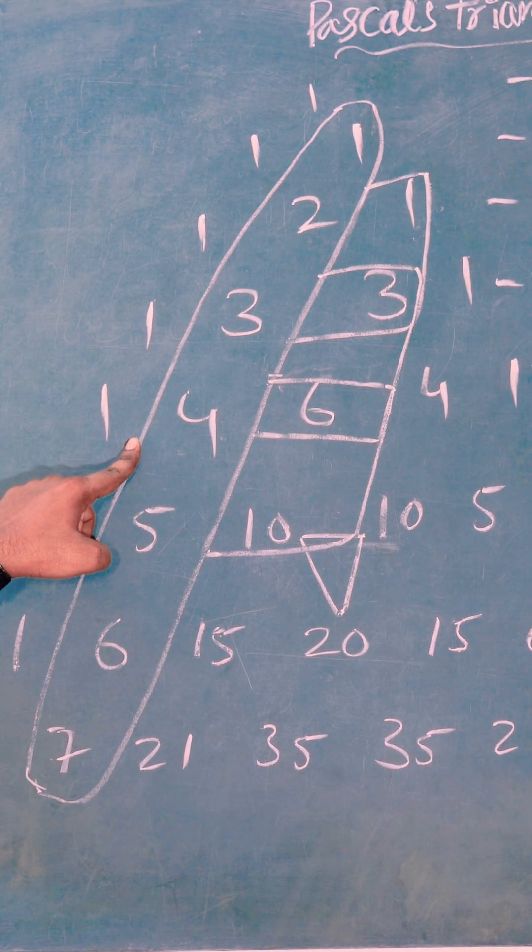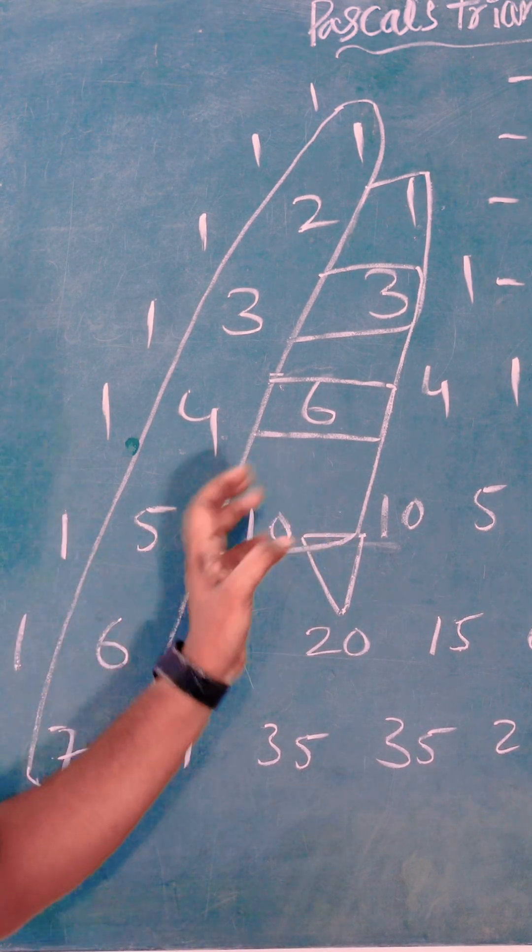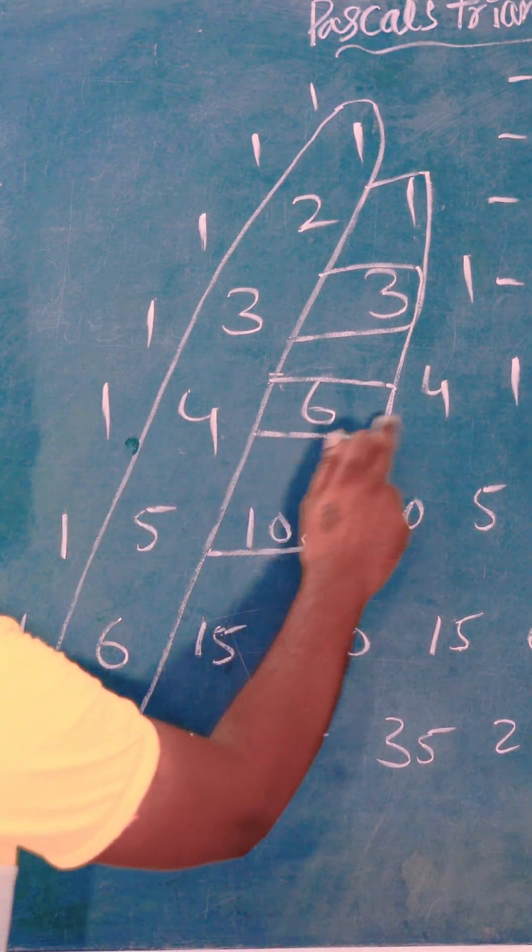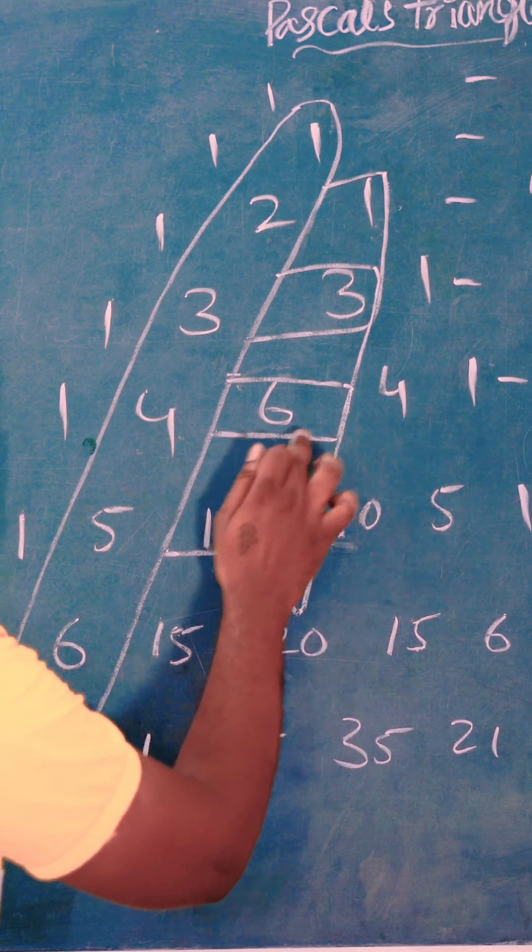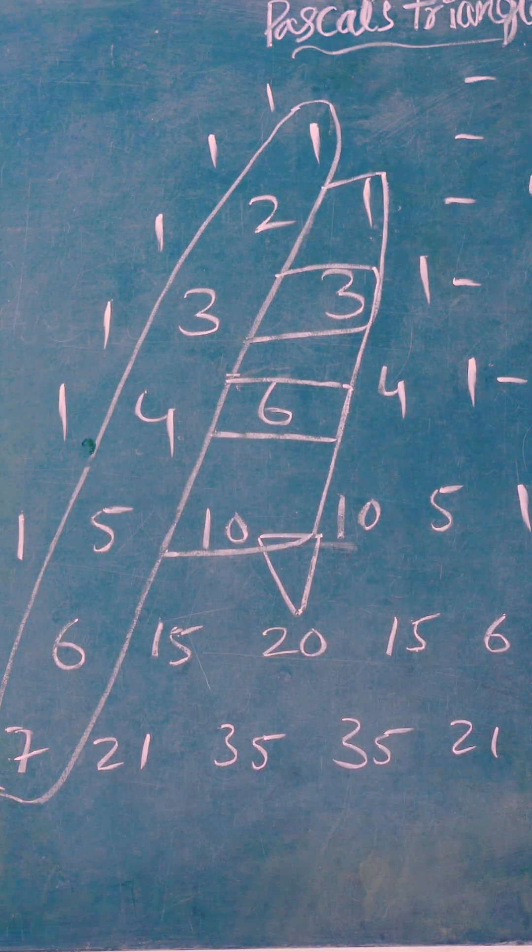Here palindromic rows. Each row read forward and backward same gets. Here 1, 4, 6, 4, 1. Reverse: 1, 4, 6, 4, 1. So it is a palindromic row.